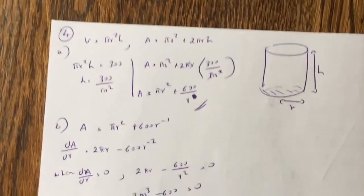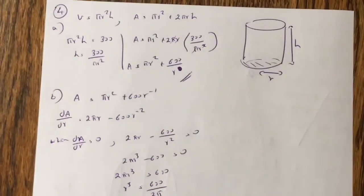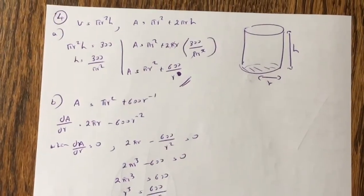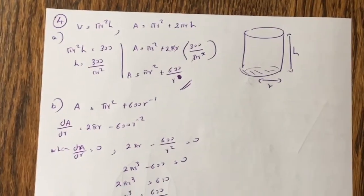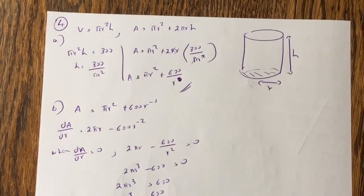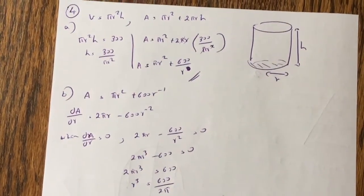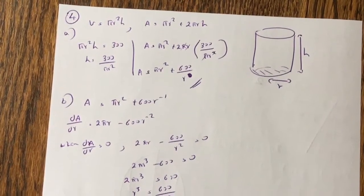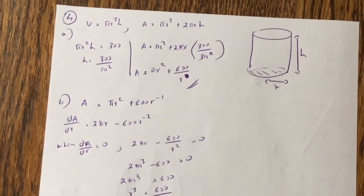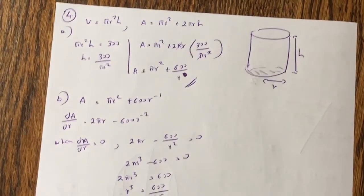So we have a cylinder. So what I've done is, I've written down the volume of a cylinder and the area of a cylinder. Area of a cylinder can change depending on what kind of a cylinder it is, so in this case, it's a cylinder with no lid, but there is a base. So pi r squared h equals 300, so h equals to 300 over pi r squared, you sub that into the area equation, and you get a equals pi r squared plus 600 over r.